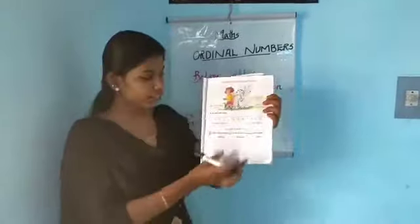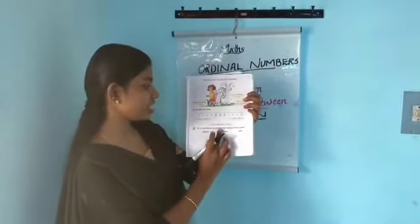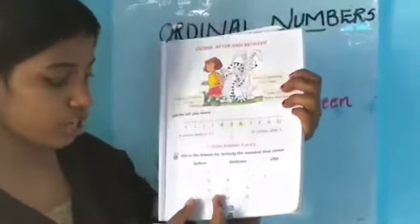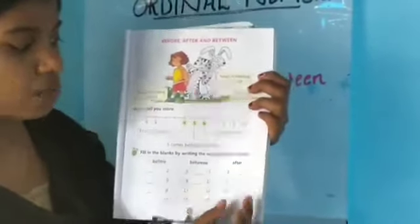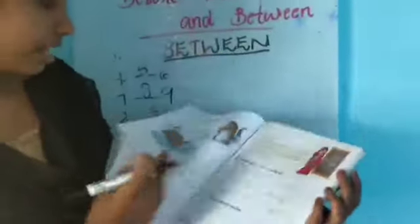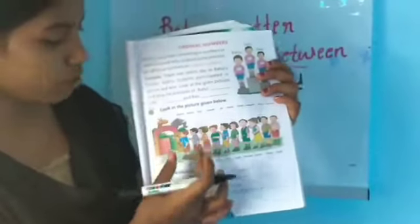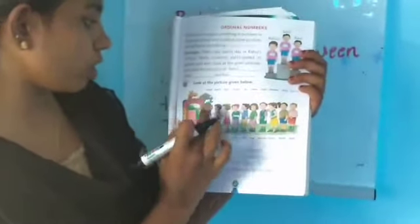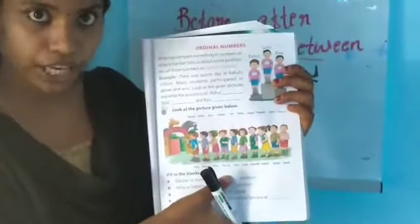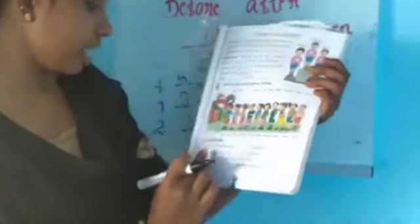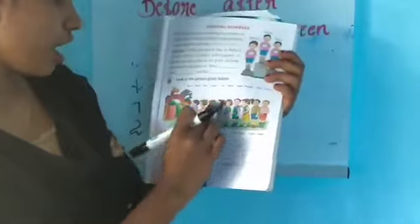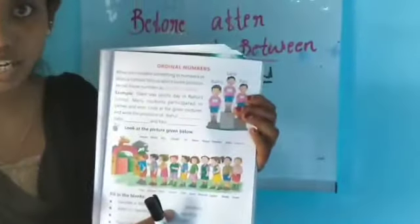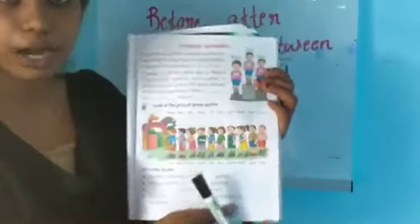There is homework for you. Fill in the blanks by writing the numeral that comes before, between, and after. There is also an ordinal numbers section — read the passage and answer: Gaurav was standing at the first position, and Aishu is standing at the ninth position.